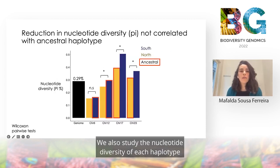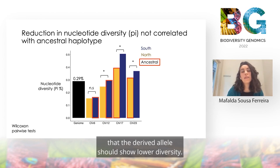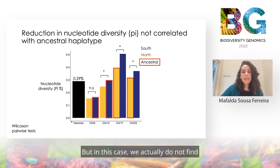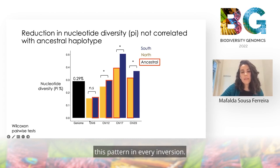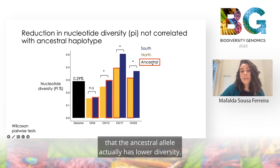We also studied the nucleotide diversity of each haplotype in each inversion, because it is usually hypothesized that the derived allele should show lower diversity. But in this case, we actually do not find this pattern in every inversion. In particular, chromosomes 17 and 23 show that the ancestral allele actually has lower diversity.